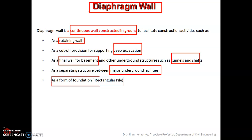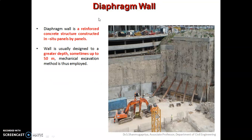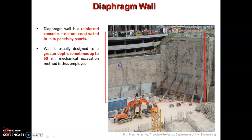In the next slide we will understand clearly what is a diaphragm wall and its typical construction sequence with pictures. On the right side of the slide you can see this diaphragm wall. This diaphragm wall is a reinforced concrete structure which is constructed in situ panel by panel. These walls are usually designed to greater depth — they can even go up to 50 meters. A mechanical excavation method is employed for the construction of the diaphragm wall.